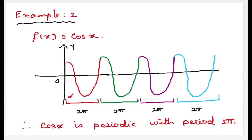Similarly, the graph of cos x is shown here with a period 2π — it goes on with a period 2π. That is, the waves repeat themselves with a gap of period 2π. Therefore, cos x is periodic with period 2π. Similarly, this applies to cosecant x and secant x as well.